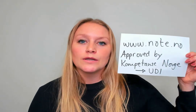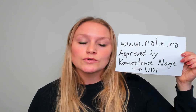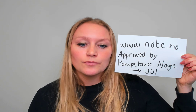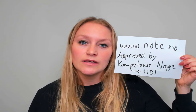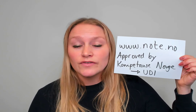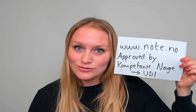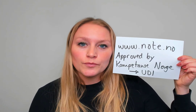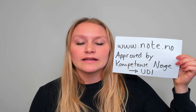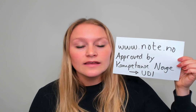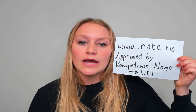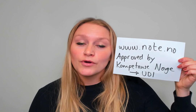If you're going to take that course online, it needs to be at an approved school. An approved school means that that school or institution is approved by Kompetanse Norge, which is the organization approving schools for Norwegian courses and also the social studies course. If the school is approved by Kompetanse Norge, then it's automatically also approved by UDI if you're going to hand in your application to apply for permanent residency.